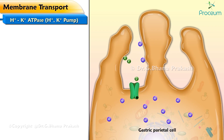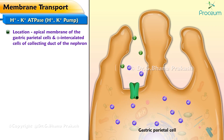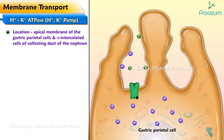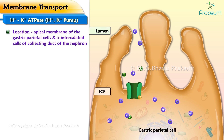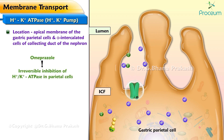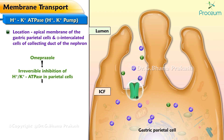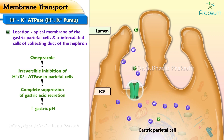Let's talk now about the H+/K+ ATPase pump. The H+/K+ ATPase is found in the apical membrane of the gastric parietal cells and alpha-intercalated cells of the collecting duct of the nephron. In the stomach, it pumps H+ from the ICF of the parietal cells into the gastric lumen, where it acidifies the gastric contents. Proton pump inhibitors (PPIs), for example omeprazole, cause irreversible inhibition of H+/K+ ATPase in parietal cells, causing complete suppression of gastric acid secretion and increasing gastric pH.